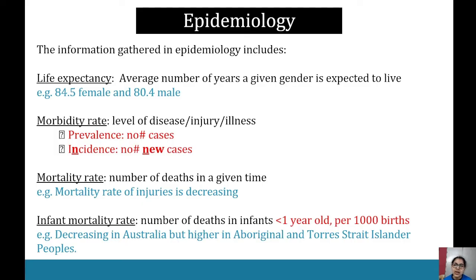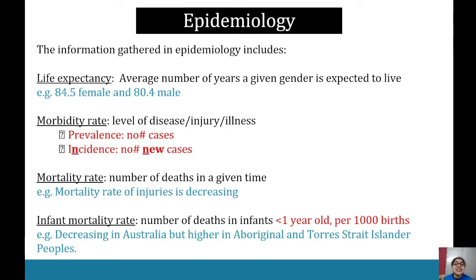Morbidity rate is the level of disease or illness in a population. We classify that under prevalence — which is the total number of cases altogether — versus incidence, which is the number of new cases. To remember: incidence equals new cases. For example, with COVID, prevalence would be how many people in Australia have already had COVID, whereas incidence is the number of new cases this week.